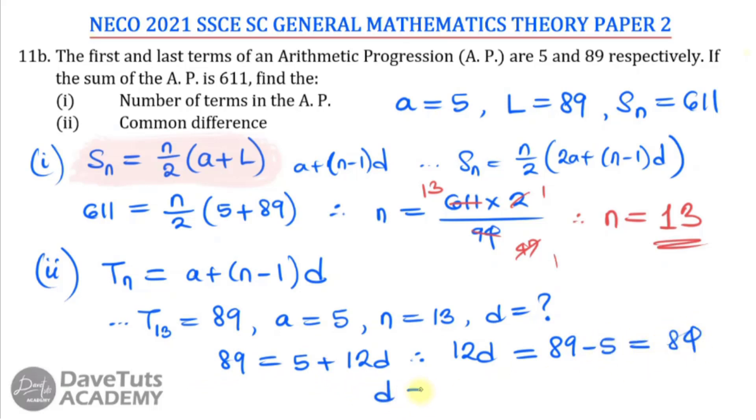Then D itself, in that case, will be 84 over 12. 84 over 12 is nothing but 7. So the number of terms for this particular AP is 13, and the common difference is 7. And with that, we've been able to solve this question as requested perfectly and we are good to go.